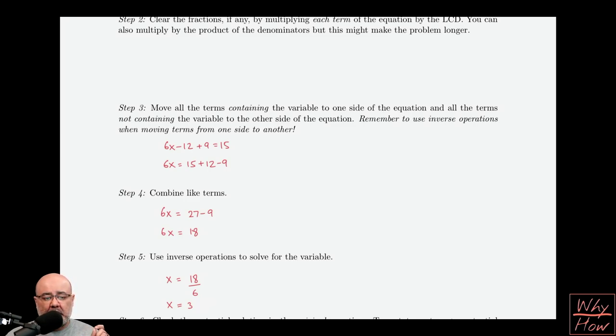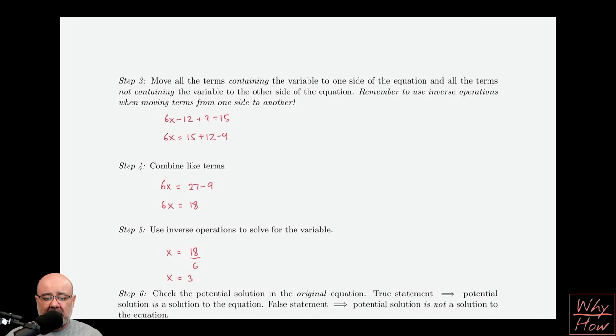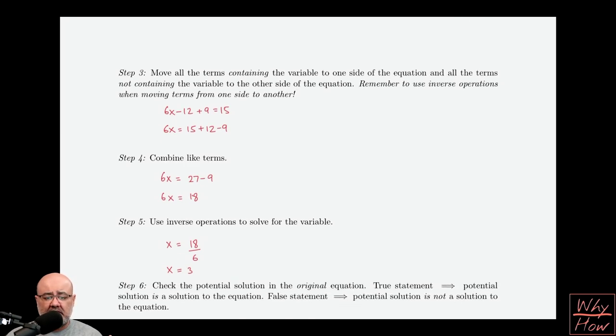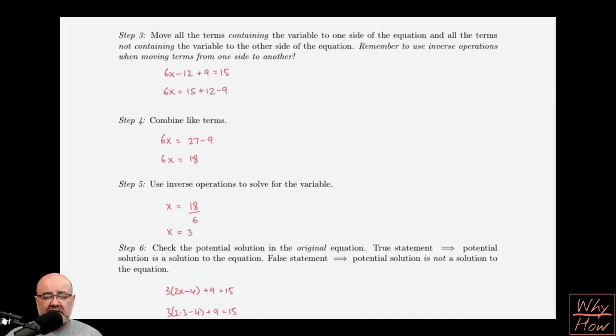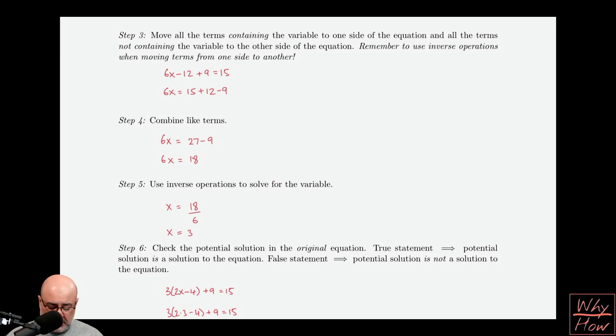That is our potential solution. We don't know that it's a solution or not, unless we check. And we must always go back to the original equation. So here I copied the original equation, and I replaced all the x's with 3. And there's only one x right here, so I swapped in a 3 for it.